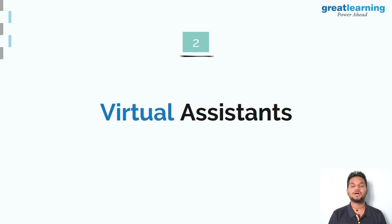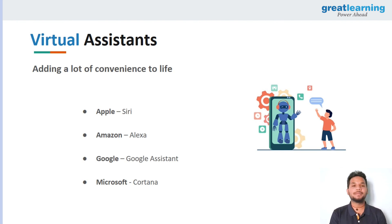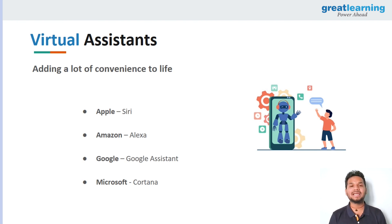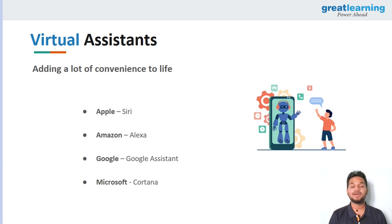At number two we have virtual assistants. We all use virtual assistants — they add so much convenience to our lives. There are many top virtual assistants: Siri from Apple, Alexa from Amazon, Google Assistant from Google, and Microsoft Cortana. These assistants are growing more capable — they can now call on your behalf, order a pizza, and have it delivered to your place. The other person on the line may not even know they're talking to a machine learning algorithm, as demonstrated by Google.